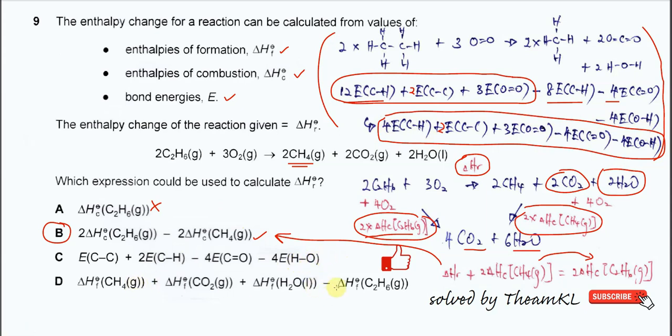D cannot be used because it doesn't really include the coefficient. The coefficient is two, so this delta H_F needs times two. So D also cannot be used. Answer confirmed is B.